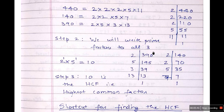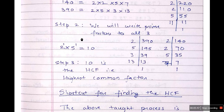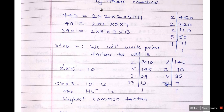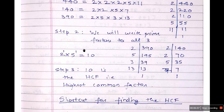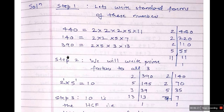Step 2: write down the prime factors common to all three. 2¹ is common in all three numbers, and 5¹ is also common in all three numbers. So we multiply 2 × 5 = 10, and 10 is the highest common factor. You can confirm: 10 divides 440, yes; 10 divides 140, yes; 10 divides 390, yes. There is no number higher than 10 that can divide all three numbers properly.